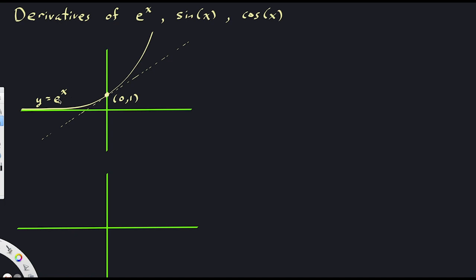This number e is about 2.7 or so. And what it's cooked up to do is make the slope at (0, 1) equal to 1. If you looked at y equals 2 to the x, it would be a little shallower and the slope at that point would be less than 1. If you looked at y equals 3 to the x, it would be steeper and the slope would be greater than 1. And e is that magic number you put in the base which makes that slope right at that point equal to 1. That's one way to actually define e.